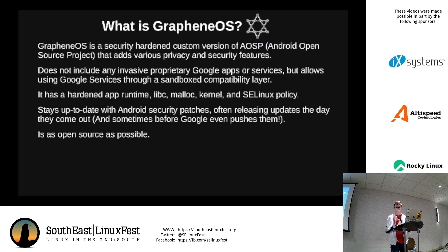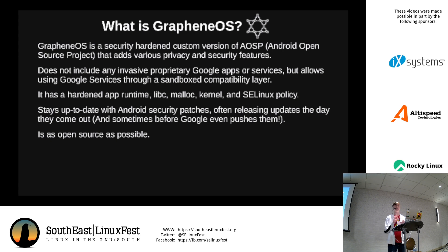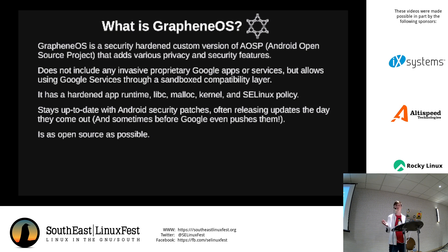What is GrapheneOS? GrapheneOS is a security-hardened custom version of AOSP that adds various privacy and security features. It does not include any invasive proprietary Google apps or services, but allows using Google services through a sandbox compatibility layer if necessary. It has a hardened app runtime, libc, malloc, kernel, and SELinux policy, and it stays up-to-date with Android security patches — often releasing patches the day they come out, sometimes even before Google pushes them. It is as open source as possible, though some drivers or firmware may be proprietary.